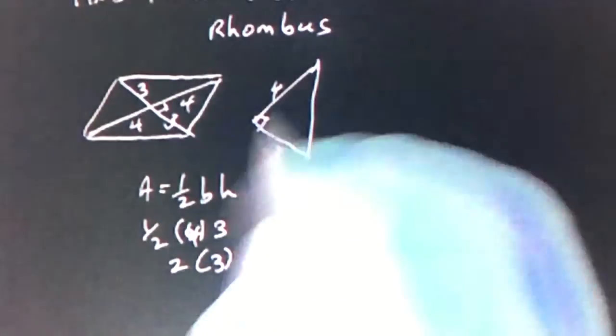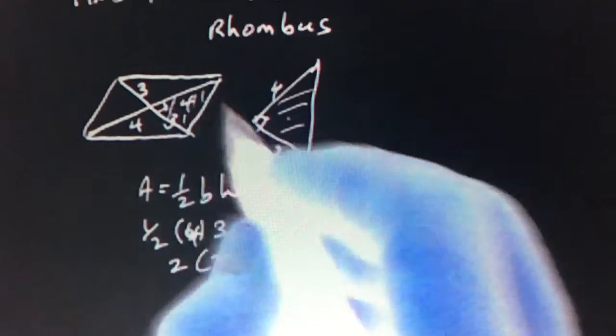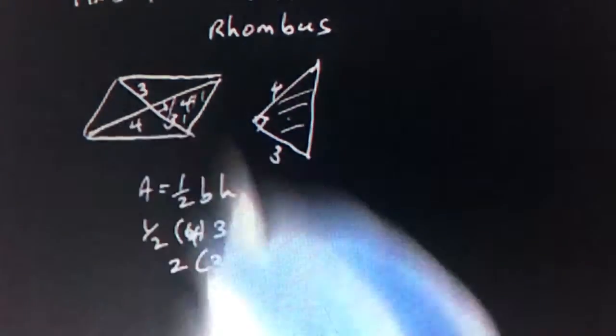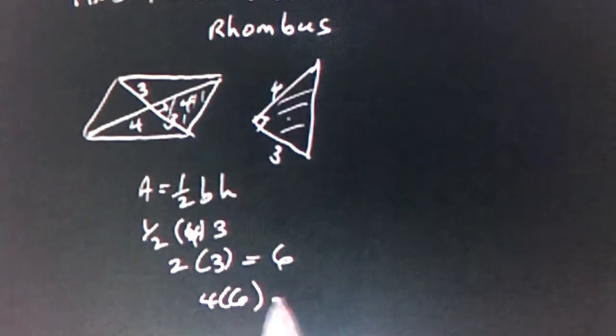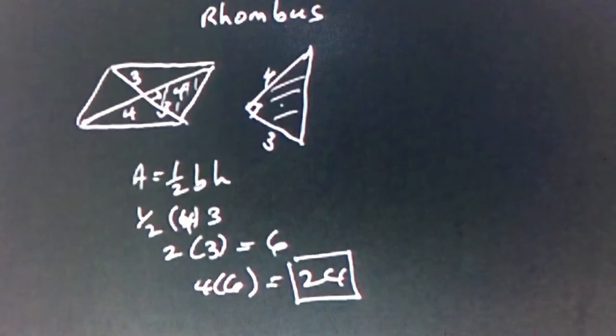All right, well, we've found the area of one of these, which is essentially the area of one of these triangles. And to find the area of the whole thing, we simply now need to multiply by 4. There's 4 of them. So 4 times 6 equals 24. And 24 is our answer for the area of the entire rhombus.